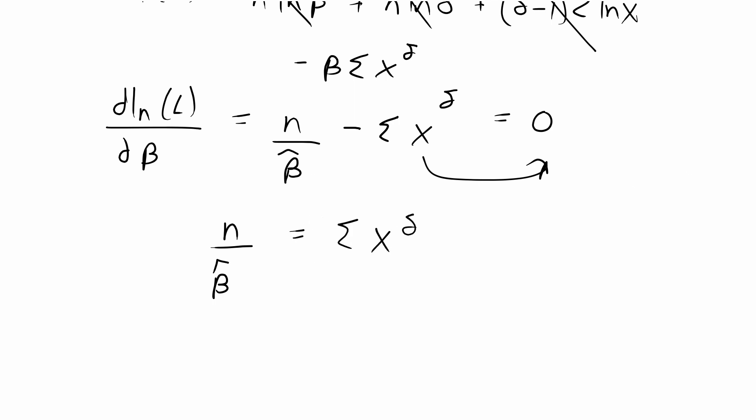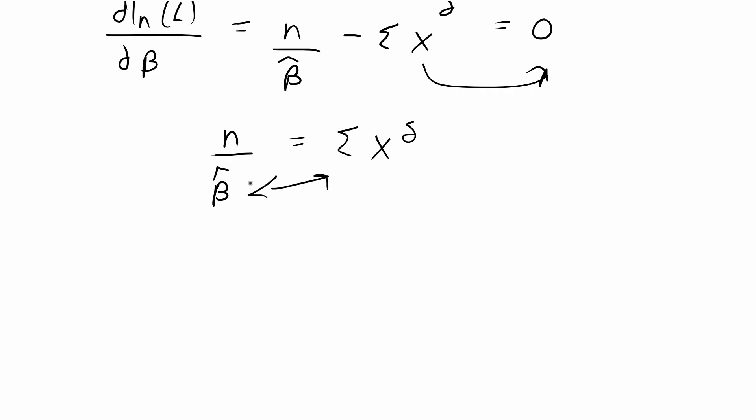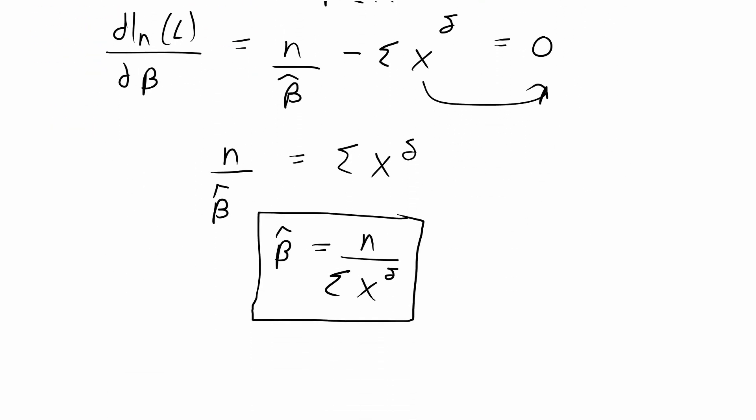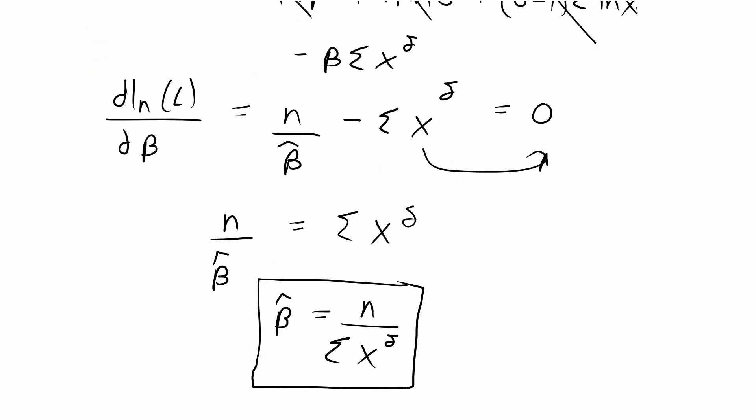And then basically we're swapping this, so we multiply by beta hat and divide by the sum of x to the delta to get beta hat is equal to n over the sum of x to the delta. And that's our final answer for the maximum likelihood estimate of this distribution, and we're done with this problem.